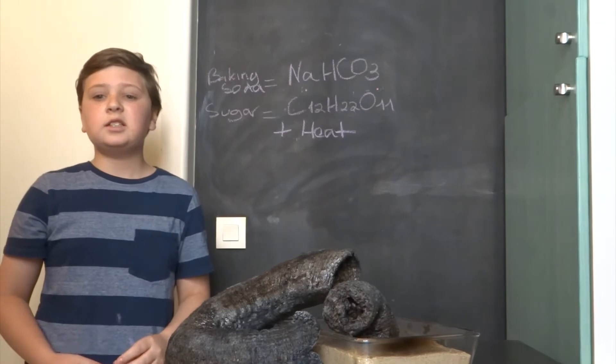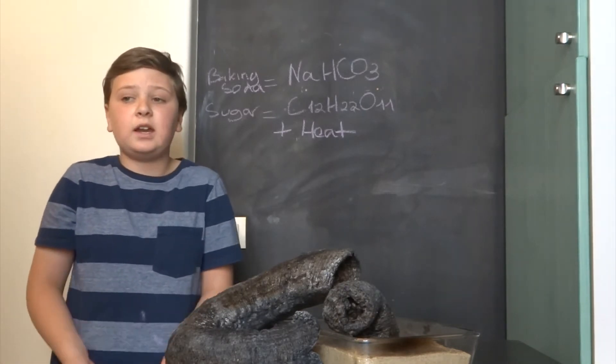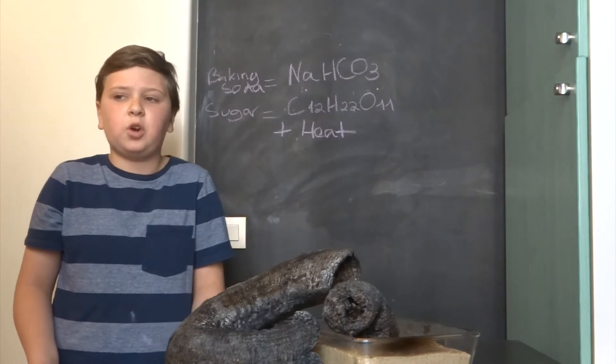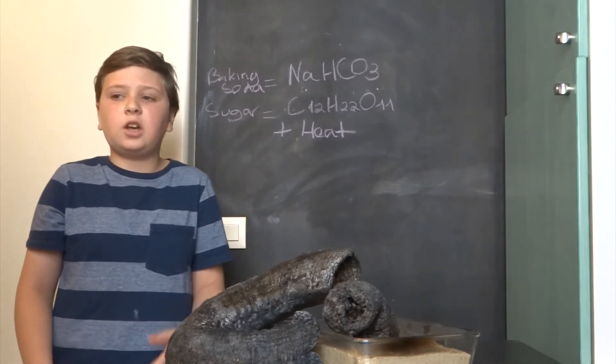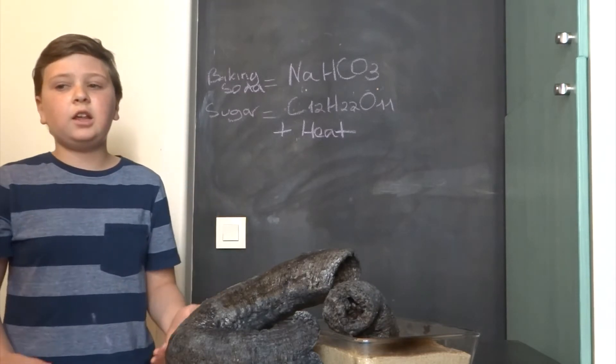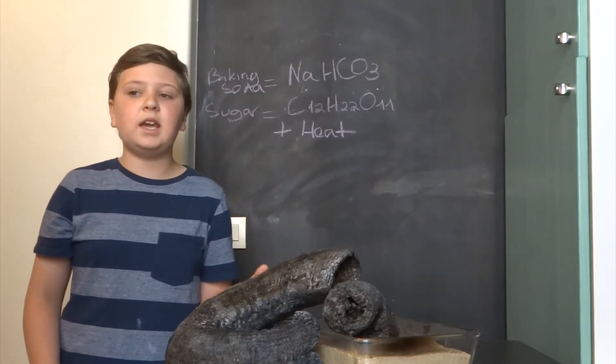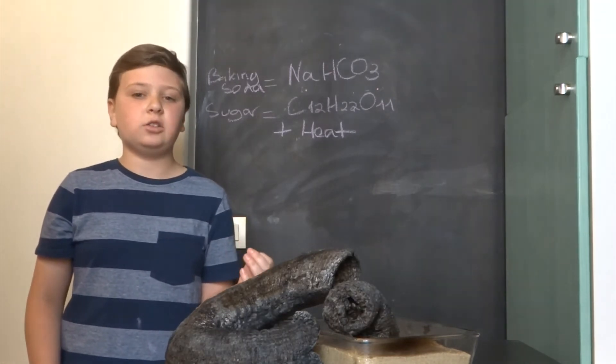Second, some of this additional sugar heats up but doesn't have access to any oxygen. So instead of burning, it just turns into solid carbon and more water vapor. This solid carbon now gives the snake some shape and also gives the snake its black color.